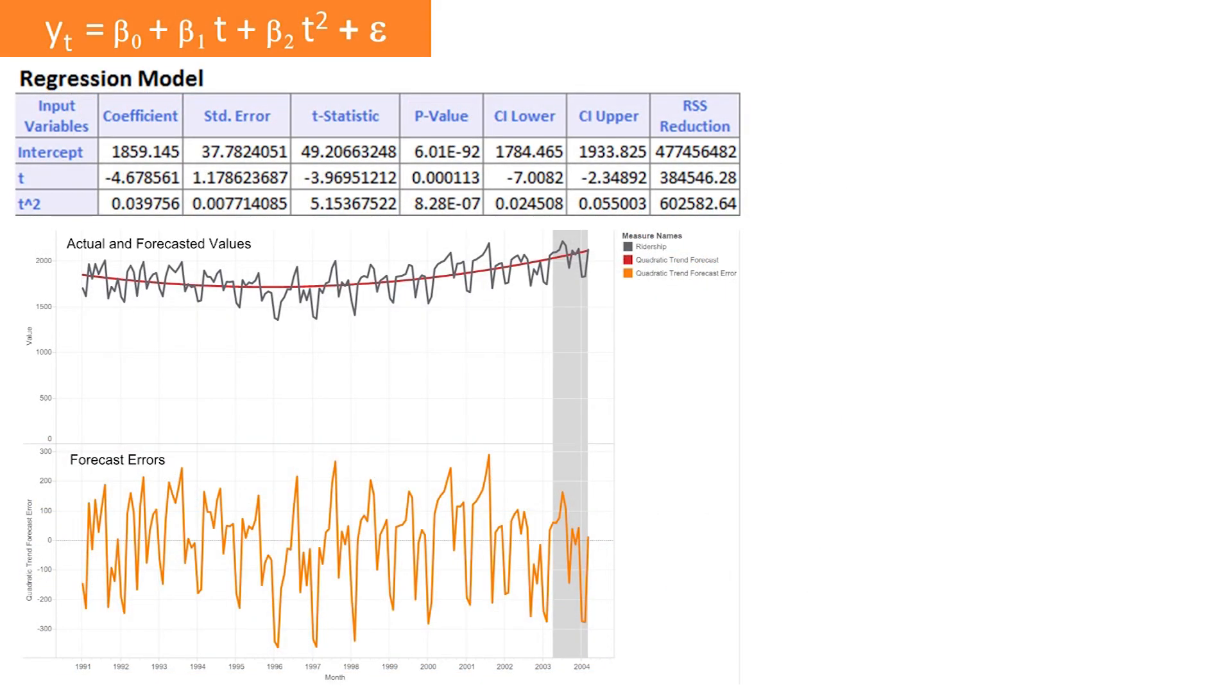Here's an example of an output from fitting a quadratic trend to the training period of the Amtrak monthly ridership. Looking at the performance charts, we see that the U-shaped trend is captured nicely. The forecast error chart no longer displays a trend. Although, of course, it does not display seasonality, which we have not captured with this model.